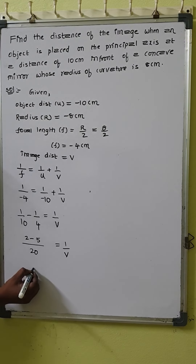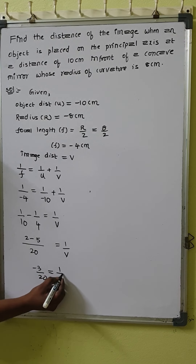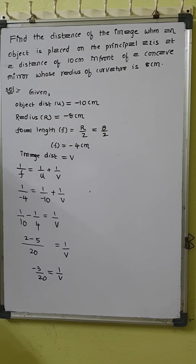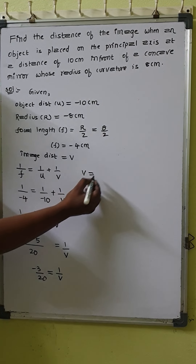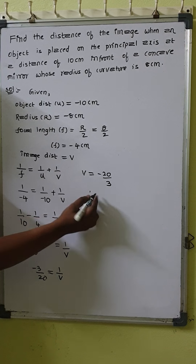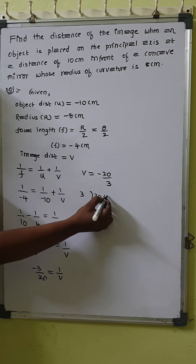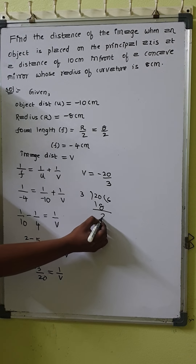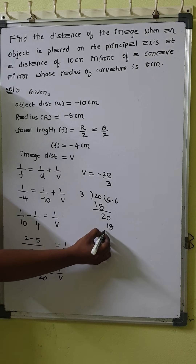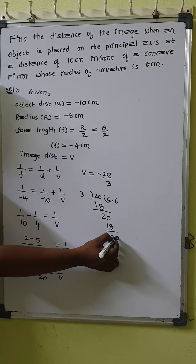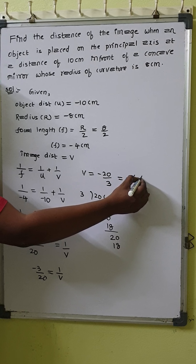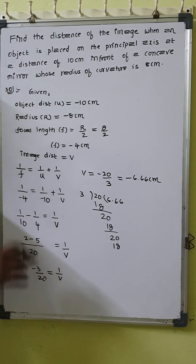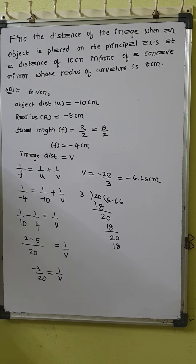We need v, so taking the reciprocal: v = −20/3. Dividing 20 by 3 gives 6.66. So v = −6.66 centimeters. The minus sign indicates it is a real and inverted image. The image is formed at a distance of 6.66 centimeters from the pole of the mirror.